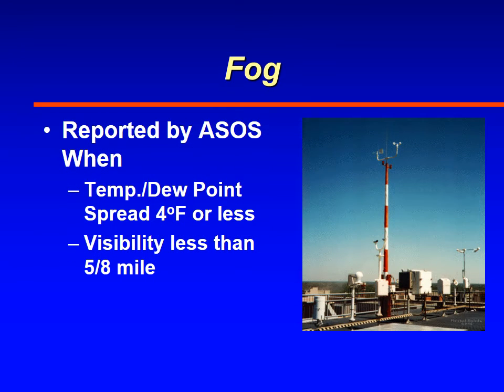The ASOS machine will determine when there's fog and will report FG when it sees visibility is less than five-eighths of a mile and when the temperature dew point spread is four degrees Fahrenheit or less. If it's greater than four degrees Fahrenheit, it assumes it's not close to saturation and will report something else.